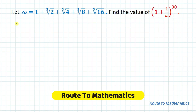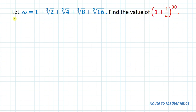Hello everyone, welcome to Root to Mathematics. In this video we are going to solve an interesting math Olympiad question. The given question is: let w equal 1 plus the 5th root of 2, plus the 5th root of 4, plus the 5th root of 8, plus the 5th root of 16. Then find the value of 1 plus 1 over w, to the power of 30. So without any delay, let's start solving this question.